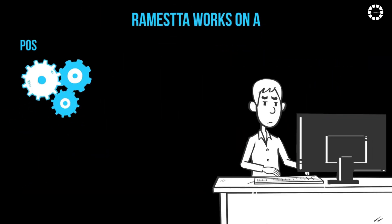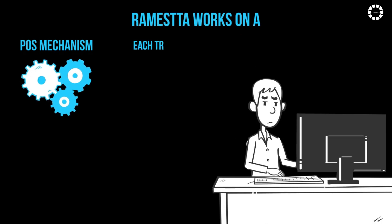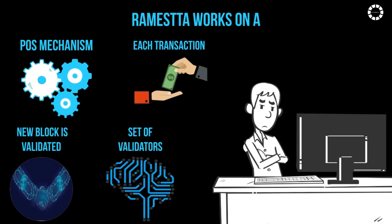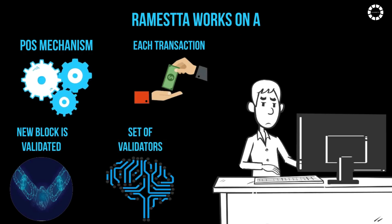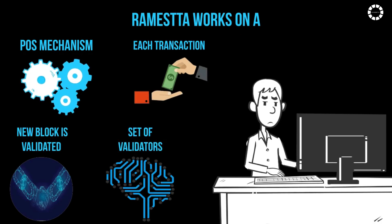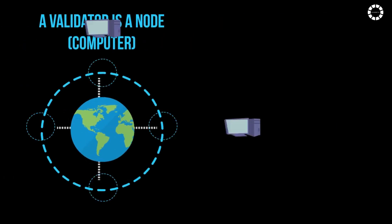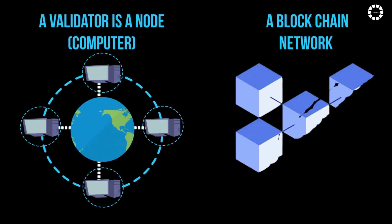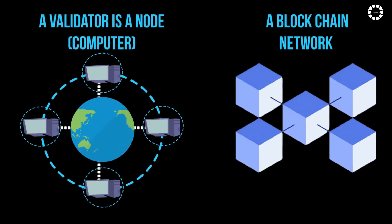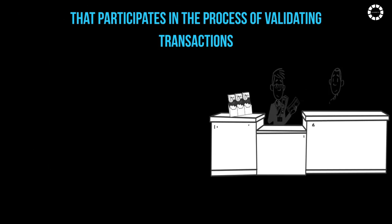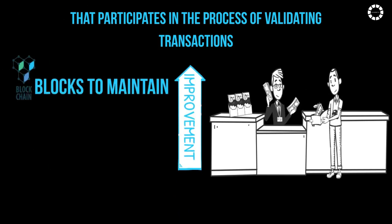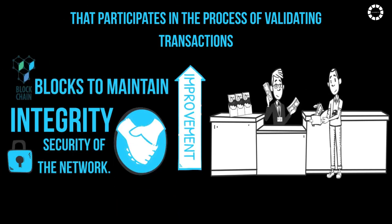Romesta works on a Proof-of-Stake mechanism, meaning each transaction and addition of a new block is validated by a set of validators. A validator is a node on the blockchain network that participates in validating transactions and blocks to maintain the integrity and security of the network.